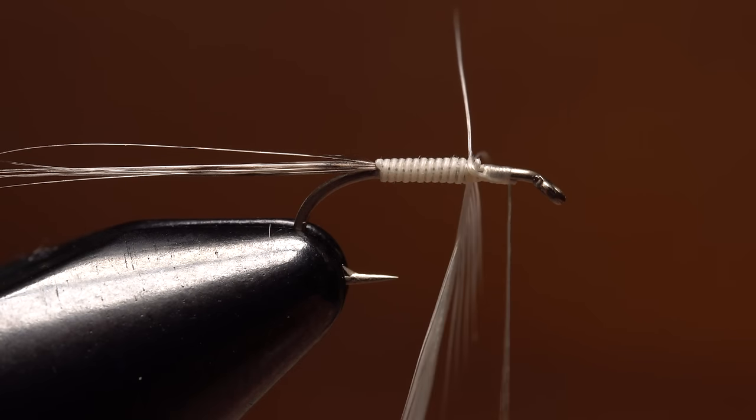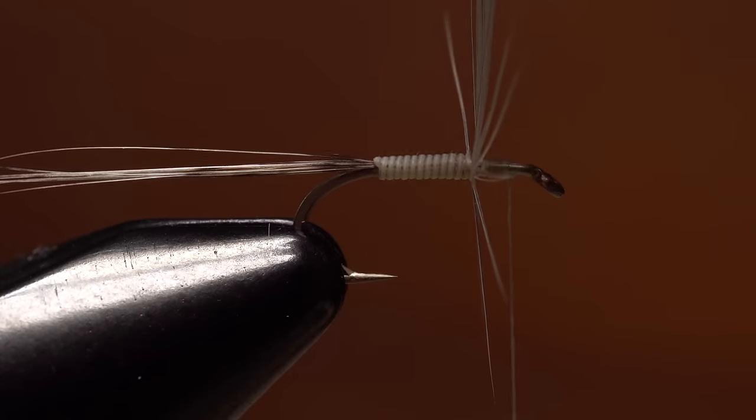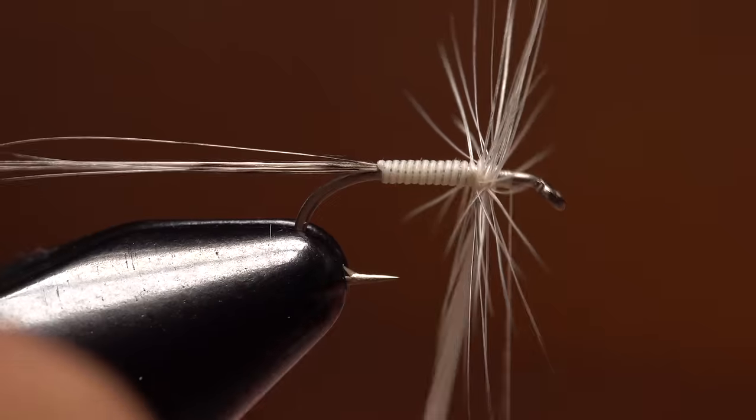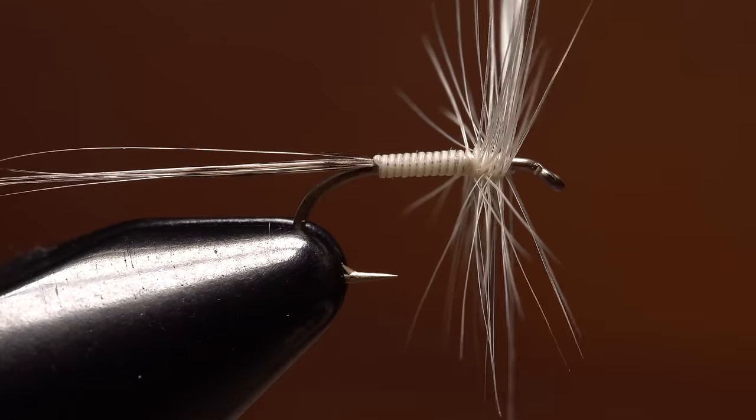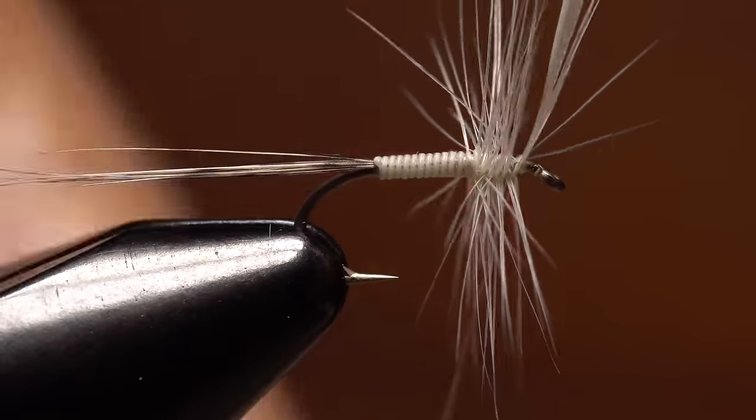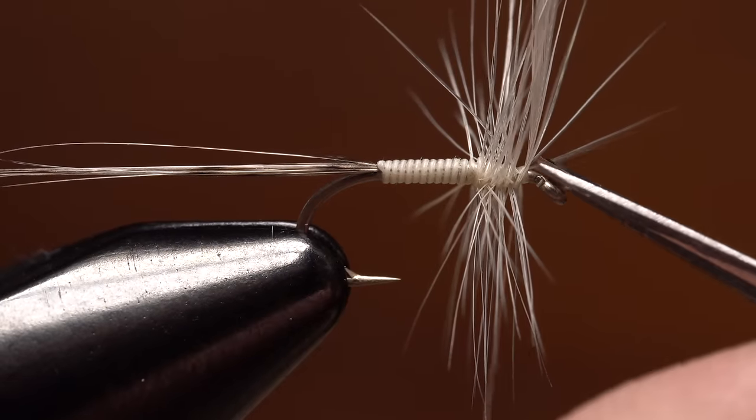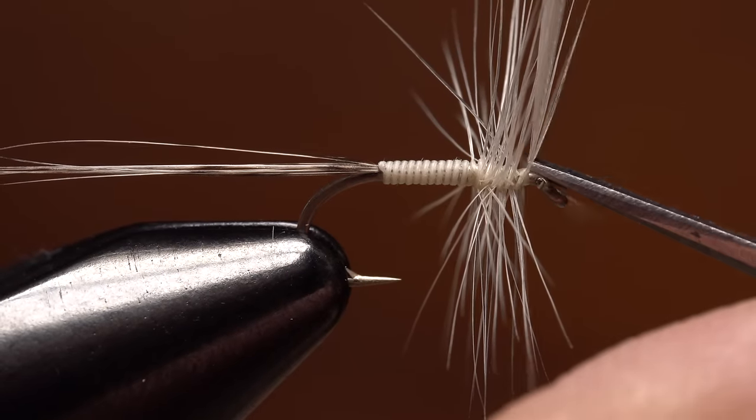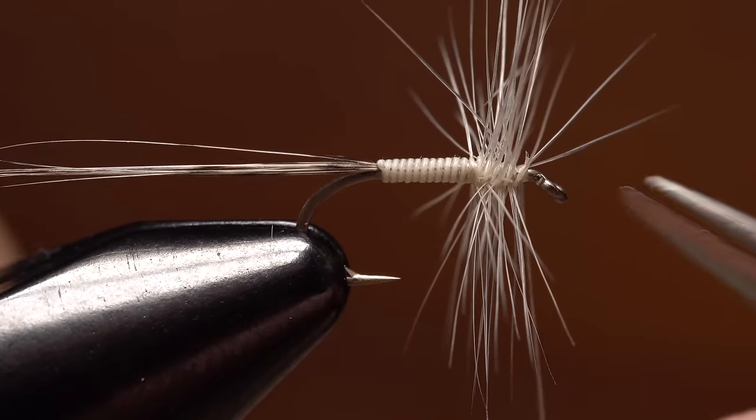Start making touching wraps with the hackle up the hook shank to your tying thread, making sure to leave ample space behind the hook eye. When you reach your tying thread, use it to secure the hackle with two or three tight turns. You can then reach in with the very tips of your tying scissors and snip the excess hackle off close.